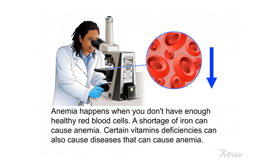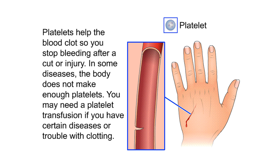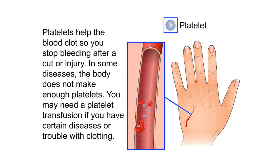Anemia happens when you don't have enough healthy red blood cells. A shortage of iron can cause anemia. Certain vitamin deficiencies can also cause diseases that lead to anemia. Platelets help the blood clot so you stop bleeding after a cut or injury. In some diseases, the body does not make enough platelets. You may need a platelet transfusion if you have certain diseases or trouble with clotting.